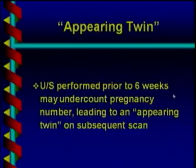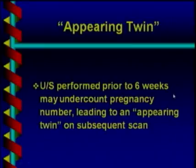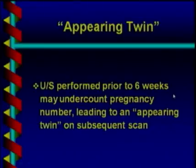The appearing twin phenomenon occurs prior to six weeks, when ultrasound may undercount pregnancy number, leading to a so-called appearing twin on a subsequent scan. This can be embarrassing if you don't recognize and explain it to the patient. If you tell the woman at five weeks she has a singleton, then on follow-up she has twins, she may think you made a big error. Or you say twins, and she'll come back with a third.